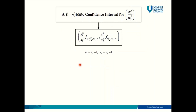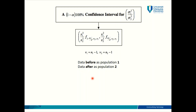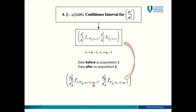In this particular problem about the machine, we have two different populations — data from before service and data from after service. Let's denote data from before service as population 1 and data from after service as population 2. I'm going to change the notation in the formula so that 1 becomes B for before and 2 becomes A for after. I find it easier when I change the formula this way so that at the top I have before data and at the bottom I have after data.